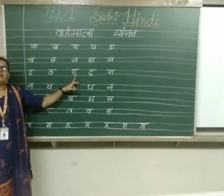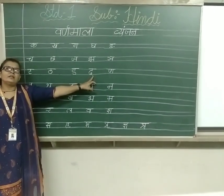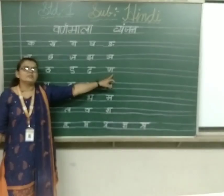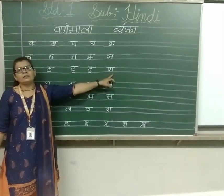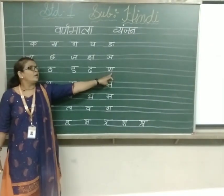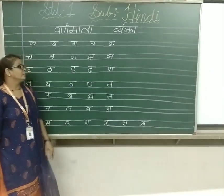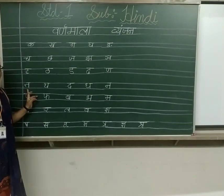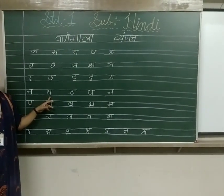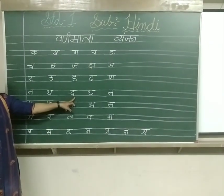ड से डमरू, ढ से ढक्कन. अनुस्वार — Anusvara se baram. Anusvara ka use — jab words banate hain, tab uska aage ya pichhe words mein use karte hain. ण से तलवार, त से परमास, द से डमरू.